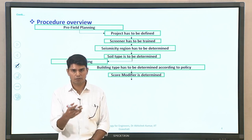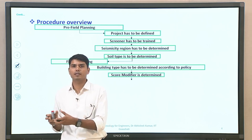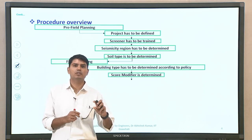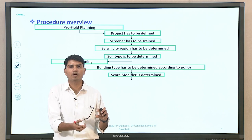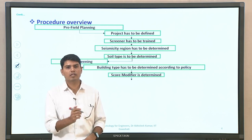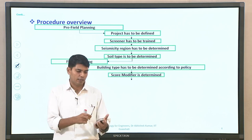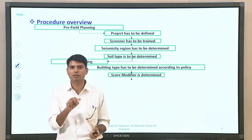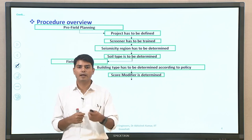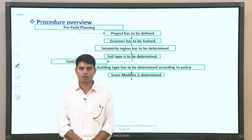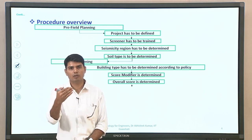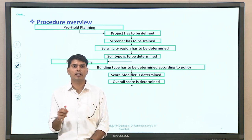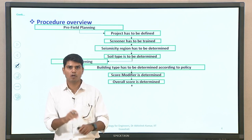When going for score assessment, you determine the base score corresponding to the building type. Then apply score modifiers for different parameters to arrive at the overall score. The base score is modified — there was a base score corresponding to building type, and this has to be modified taking into account different parameters. Base score plus the summation of score modifiers gives the overall score for a particular building or set of buildings.